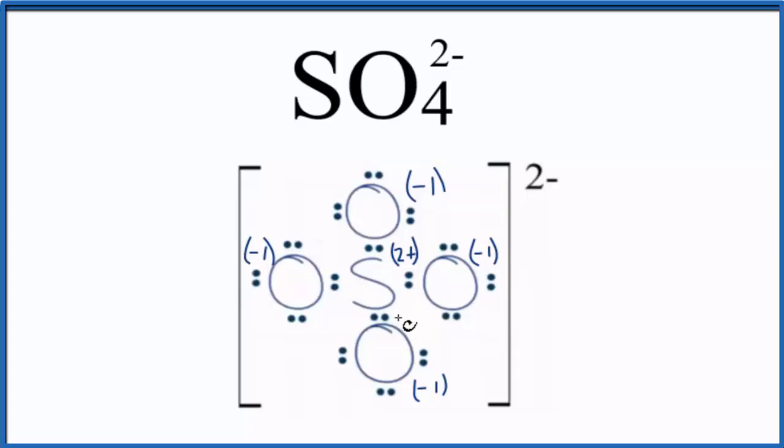If you need help calculating formal charges, there's a link in the description of this video and at the end to help you. So we look at our formal charges here. We'd like them to be as close to zero as possible, while still matching the charge on the ion. I know a double bonded oxygen will have a formal charge of zero. So I'm going to move these two here to the center, and let's move these to the center. Then we'll end up with this.